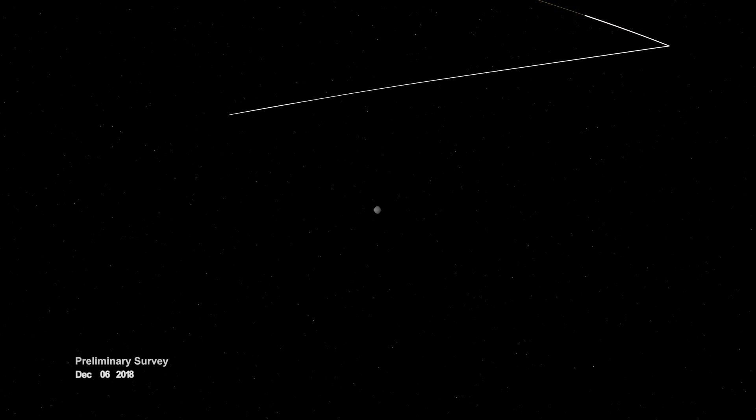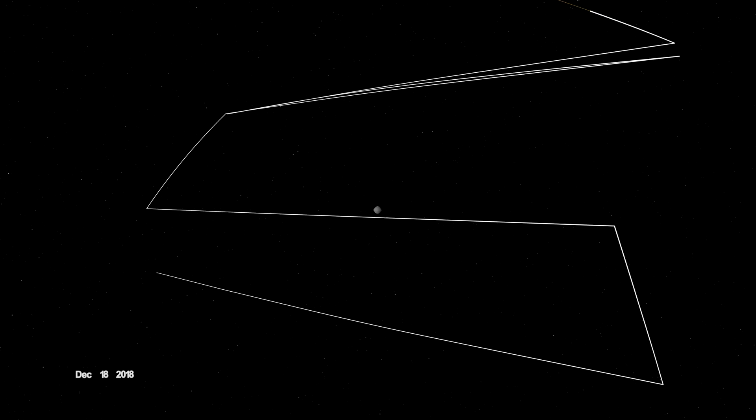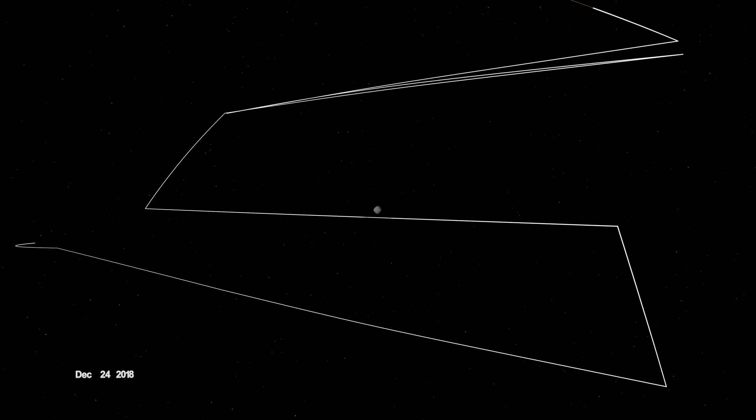When OSIRIS-REx arrived, it began wrapping Bennu in a complex web of observations, starting with a preliminary survey of its size, shape, mass, and spin.